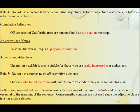Rule 5. Do not use commas to set off restrictive elements. For example: students who failed the exam will have to do extra credit if they wish to pass this class. Notice there's no comma after 'students' and no comma after 'exam.' The clause 'who did not pass the exam' limits the meaning of the noun 'students' and is therefore essential to the sentence. Consequently, commas are not used since the adjective clause is a restrictive element.